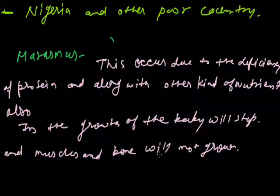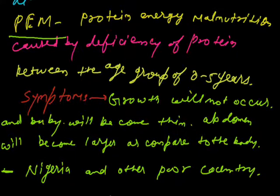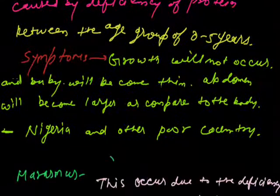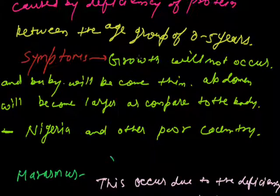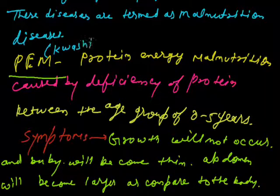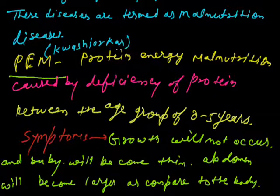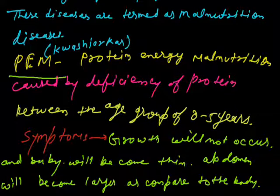So this is all about the protein energy malnutrition disease. First we are talking about PEM disease in children like Marasmus and Kwashiorkor. These two diseases are basically PEM diseases. The first disease name is Kwashiorkor. That's all about today - we have discussed the protein energy malnutrition. Thanks.